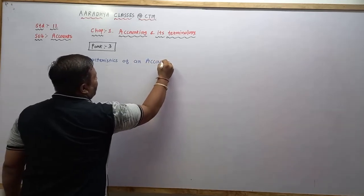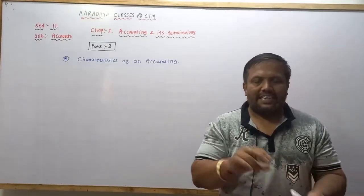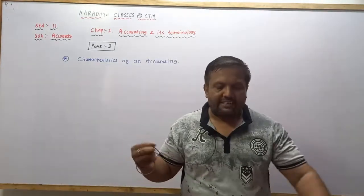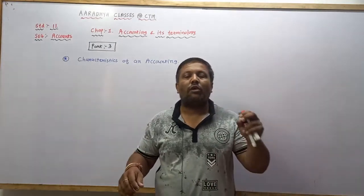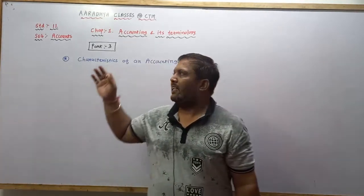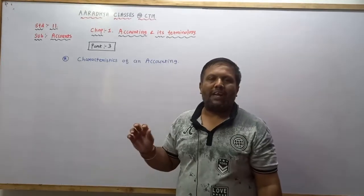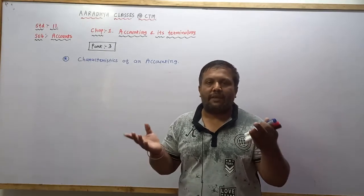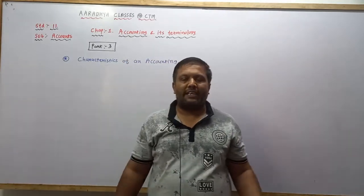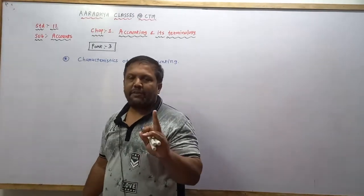Last time I gave you the definition of accounting: accounting is an art of recording, classifying, analyzing and interpreting transactions. I also explained that in business, only economic transactions are recorded — non-economic transactions are not recorded. A transaction which can be measured in terms of money is called an economic or financial transaction. Non-financial transactions are not recorded anywhere in business.